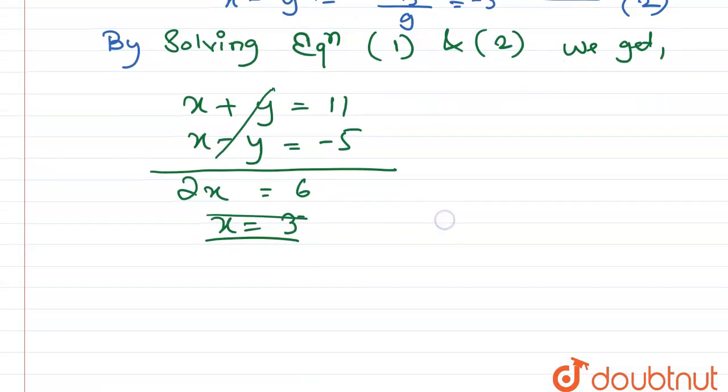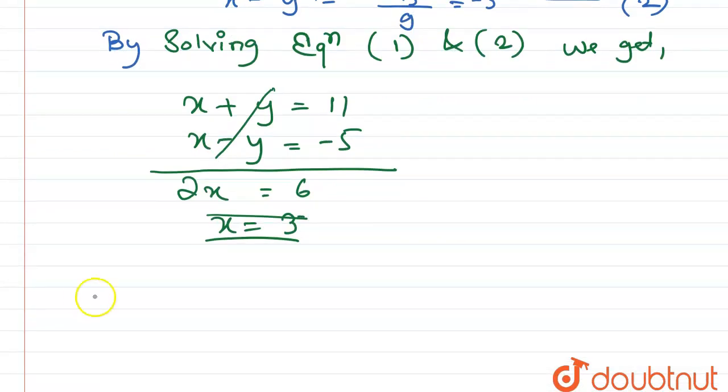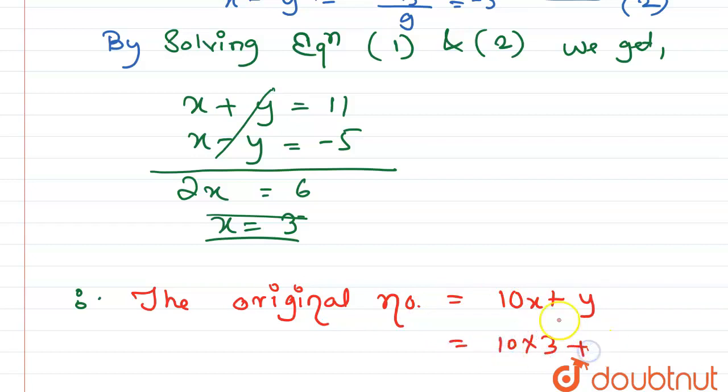So here x is 3. Therefore, the original number equals 10x plus y, equals 10 times 3 plus... From this equation we calculate y also by putting the value of x here. So if we put the value of x, 3 plus y equals 11, that means y equals 11 minus 3, that equals 8.